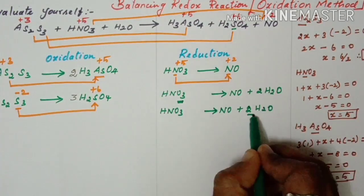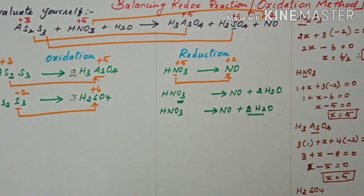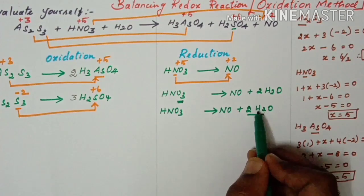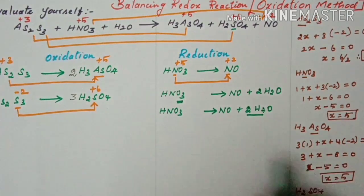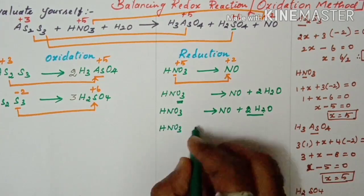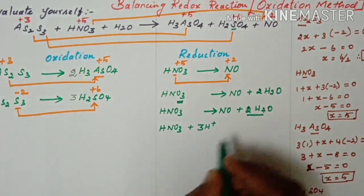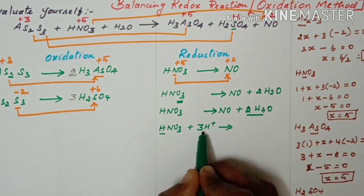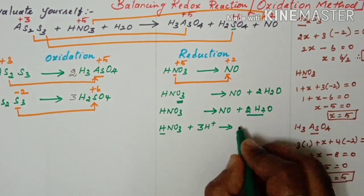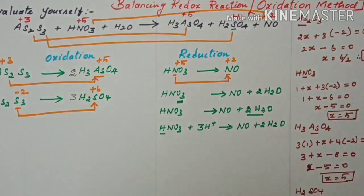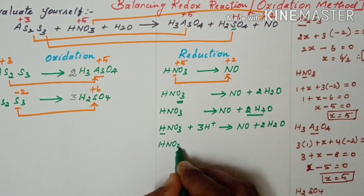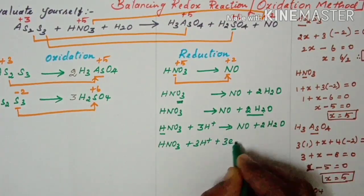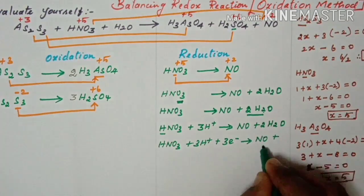Now add protons to balance hydrogen atoms. HNO3 plus 3H+ gives NO plus 2H2O. Adding 3 electrons to balance the charge: HNO3 plus 3H+ plus 3 electrons gives NO plus 2H2O. The reduction half-reaction is now balanced.